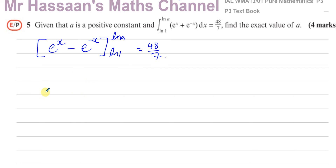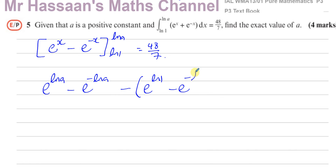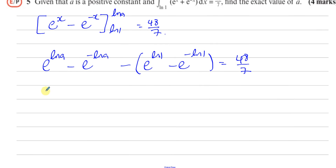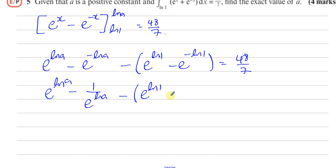Substituting the values in: e to the power of ln(a) minus e to the power of minus ln(a), minus the bracket e to the power of ln(1) minus e to the power of minus ln(1), equals 48 over 7. It makes things easier if I write e to the power of minus ln(a) as 1 over e to the power of ln(a), and similarly 1 over e to the power of ln(1).